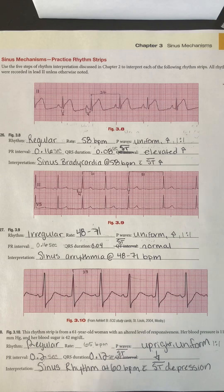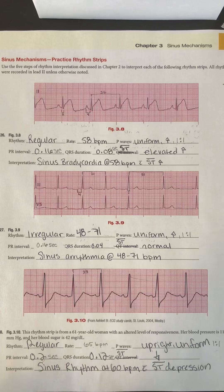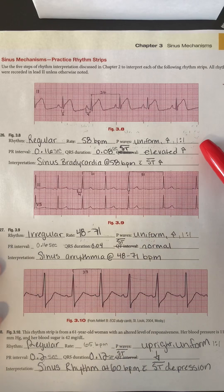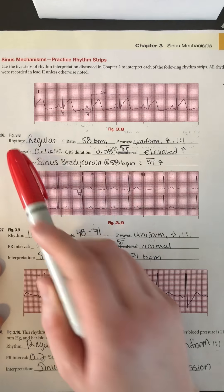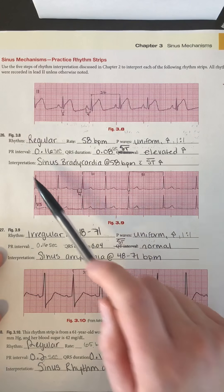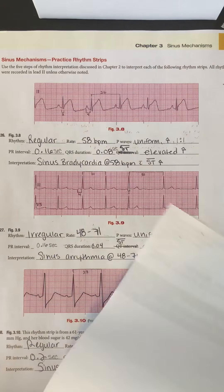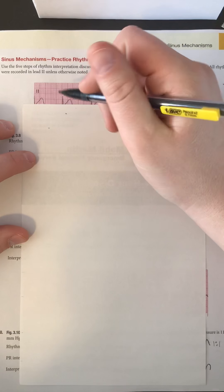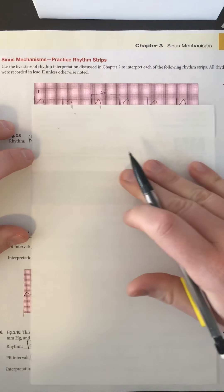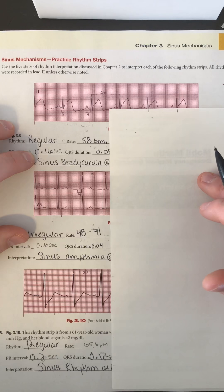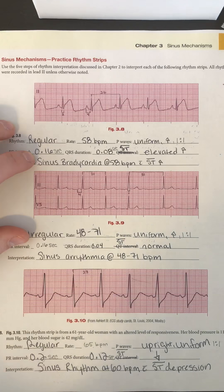For this video we're going over some of the practice rhythm strips in chapter three of the ECG Made Easy book, sixth edition. This is over sinus mechanisms. We won't be covering all the strips due to time. Looking at the first practice strip, number 26 or figure 3.8 — first thing we want to look at is regularity. Looking at this rhythm, it looks to be pretty regular, and we can use this method to see that the QRS complexes appear pretty regularly.